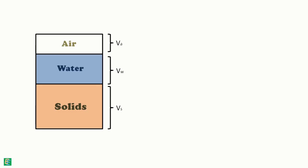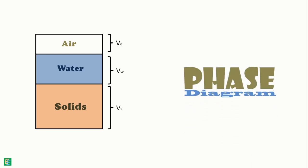This diagrammatic representation of different phases in soil mass is called a phase diagram. This kind of diagram represents partially saturated soils in which voids are partially filled with water and the rest with air. This diagram contains three phases: solid, water, and air. Hence it is called a three-phase diagram.